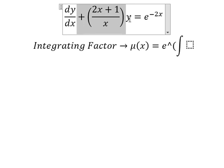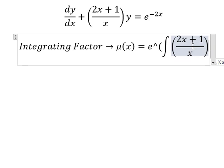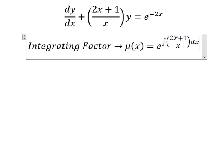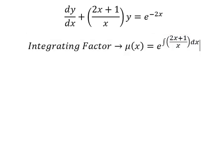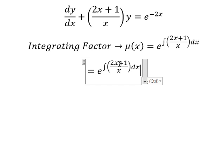So we see that this one next to y, this is for the integrating factor. We have (2x+1) divided by x, which is 2 plus 1 over x.